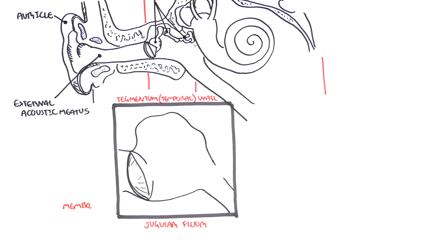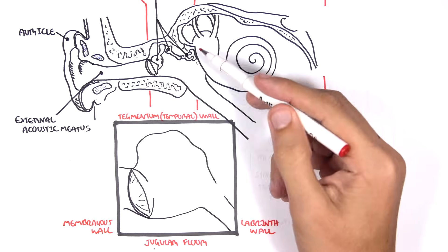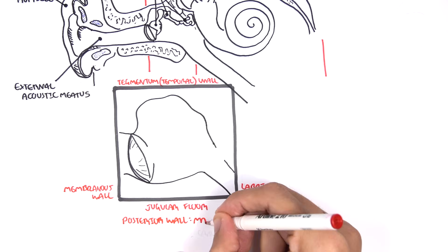The lateral wall is called the membranous wall because this is where your eardrum is. The medial wall is the labyrinth wall because this is where the labyrinth of the inner ear is located.